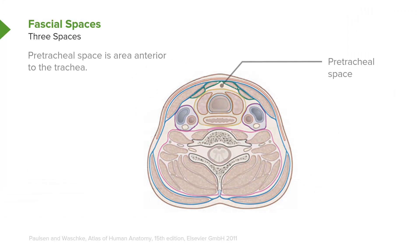First, we have the pretracheal space. The pretracheal space is shown anterior to the visceral compartment, and thus lies anterior to the trachea in this particular view.